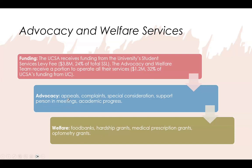On the advocacy side, we help students if they want to appeal a decision made by the university or a staff member. If something's happened and a student wants to make a formal complaint against a staff member, we help through that process. We also assist with special consideration applications — if the student is unwell or not able to perform their best, they need to provide evidence and write a blurb, and we help them through that. We can also attend meetings on behalf of or with the student.